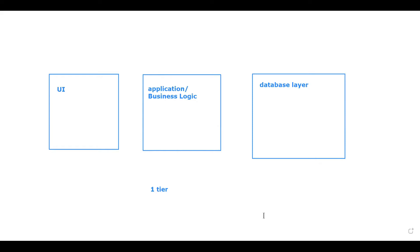For example, MS Office. If you have downloaded and installed MS Office on your machine, you have the user interface, the database, and the processing layer all on your own machine. There is no concept of a server in this case.